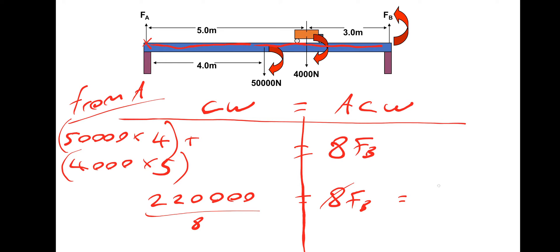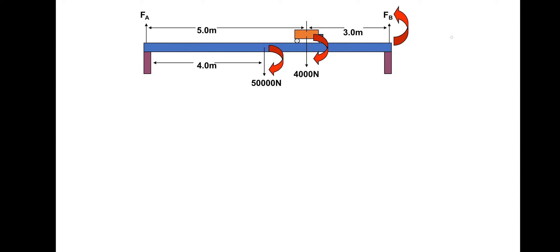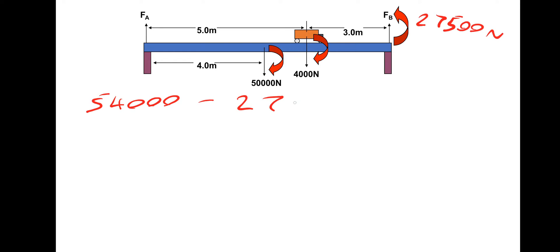So FB is simply 220,000 divided by 8, therefore FB must be 27,500 newtons. Now we need to find FA. Since the system is in equilibrium, the total forces going up must equal the total forces going down. The total forces going down is 50,000 plus 4,000, which is 54,000. Subtract the 27,500 going up, and whatever's left must be FA. Therefore FA is equal to 26,500 newtons.